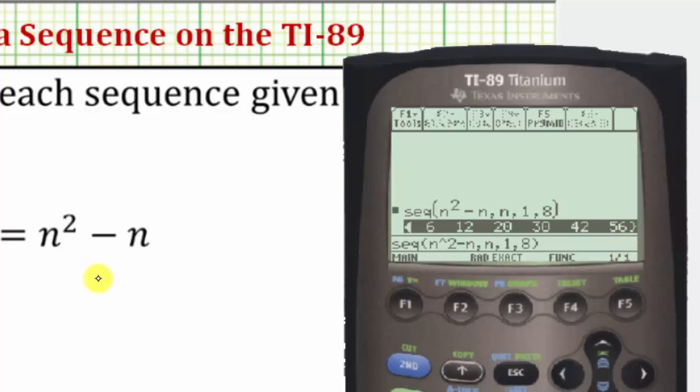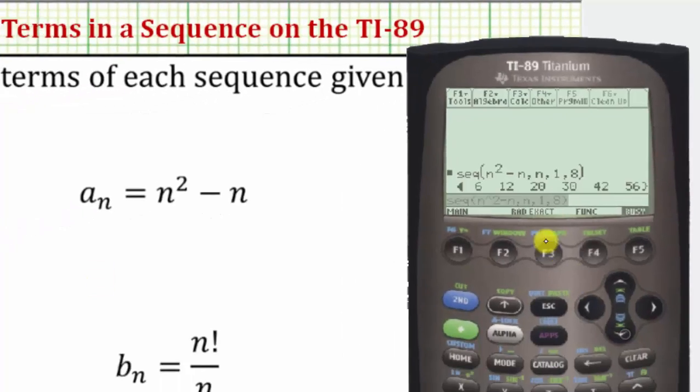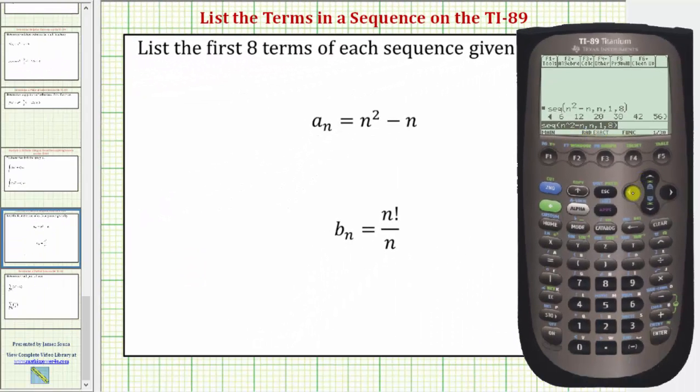And just to show we don't have to use the variable n, if I go back down to the previous entry then I'm going to press the left arrow and then right arrow over to the n, clear out the formula, comma n.